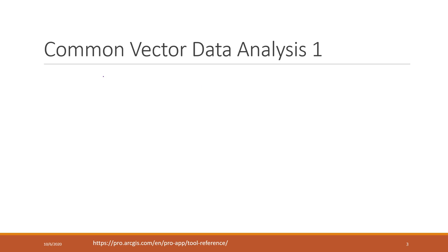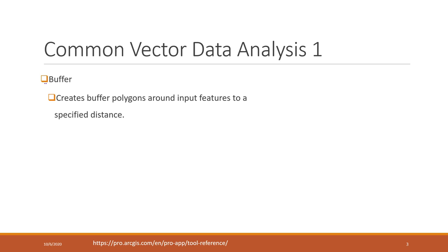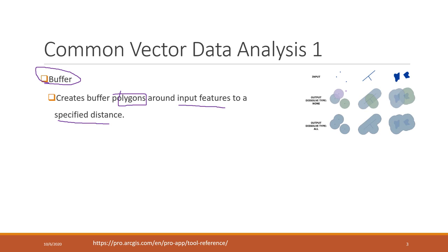Let's first introduce some commonly used vector data analysis. The first one is called buffer. The buffer means that we can create buffer polygons around any input feature to a specific distance, around any type of input feature. So the input feature can be points, can be polyline, and also can be polygons.